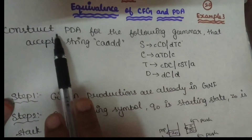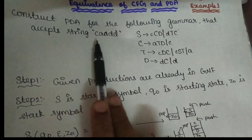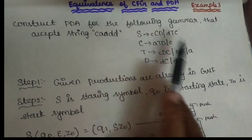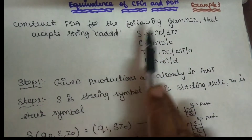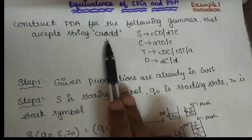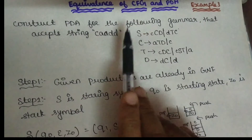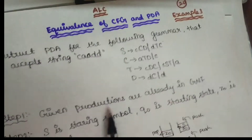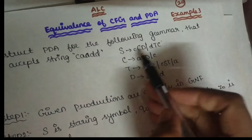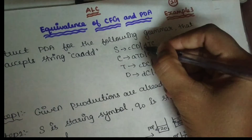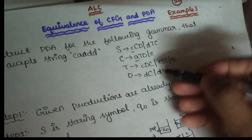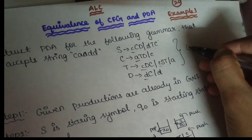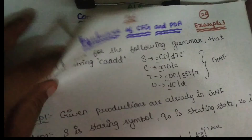Construct the pushdown automata for the following grammar that accepts the string C-A-A-D-D. This is the context-free grammar. The context-free grammar will construct the pushdown automata. If the pushdown automata reaches the final state, it will accept the string. If the stack is empty, it will not accept. Actually, if you look at the production rules, there is already a normal grammar with terminal and non-terminal combinations. So the normal form is already there, and the first step does not need to be done.